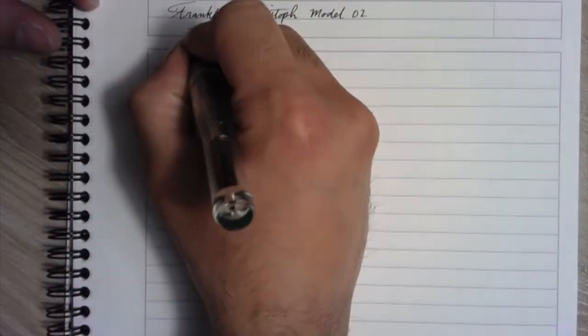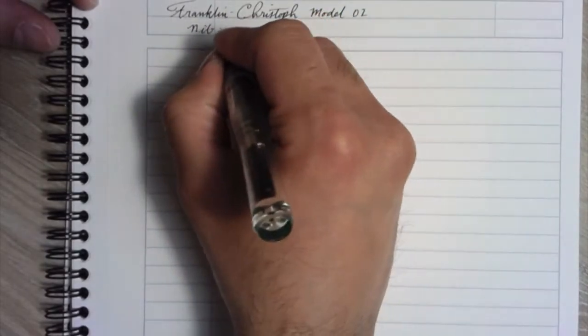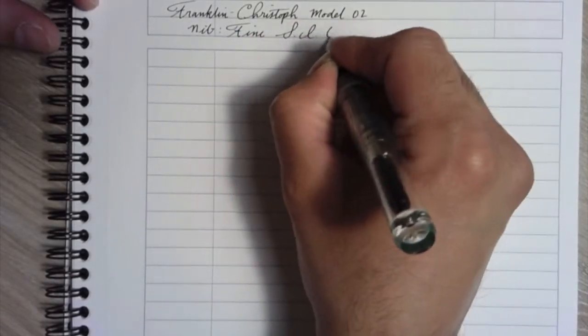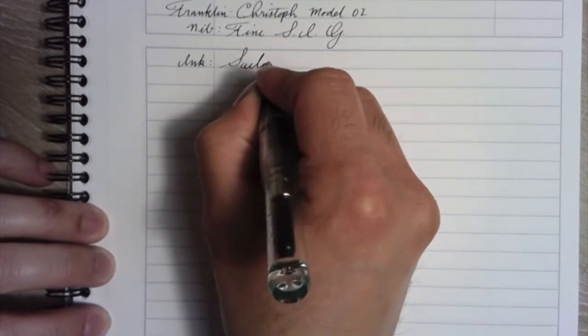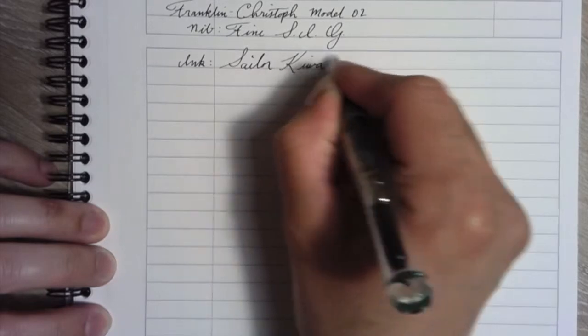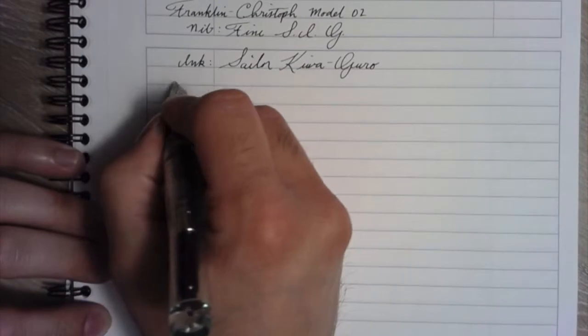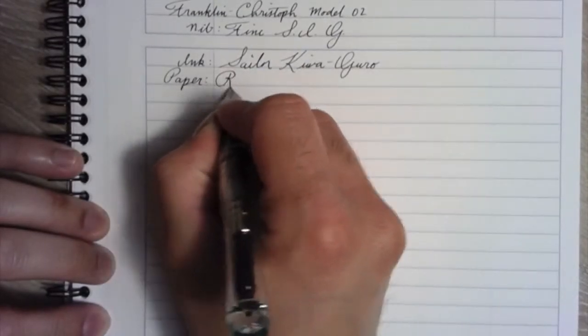I really like this pen. The nib is a fine stub italic gradient. The ink, Sailor Kiwaguro. And the paper is, of course, Rhodia.